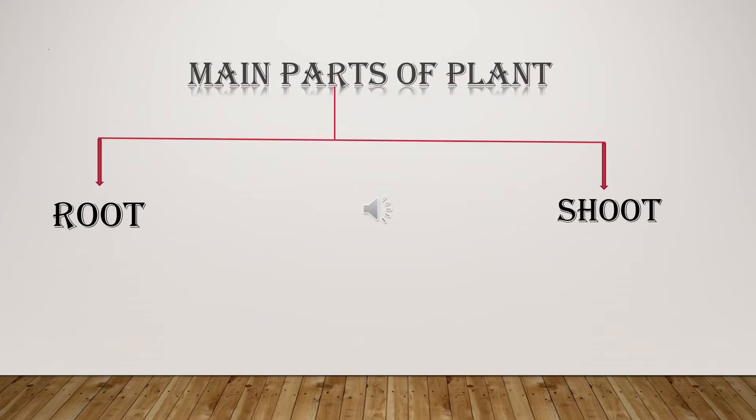A plant's body is divided into two main parts. And what are they? First is root, and the second one is shoot. Now we will discuss about each part in detail.